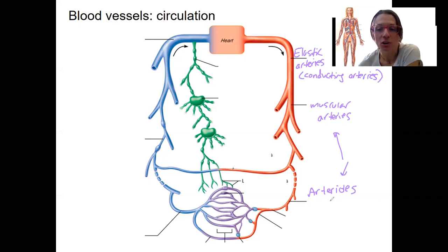These arterioles are also called resistance vessels. We'll talk about resistance and its importance to opposing flow and its involvement in pressure. The muscular arteries also provide some resistance, but arterioles are the main location. That's why they're called resistance vessels.